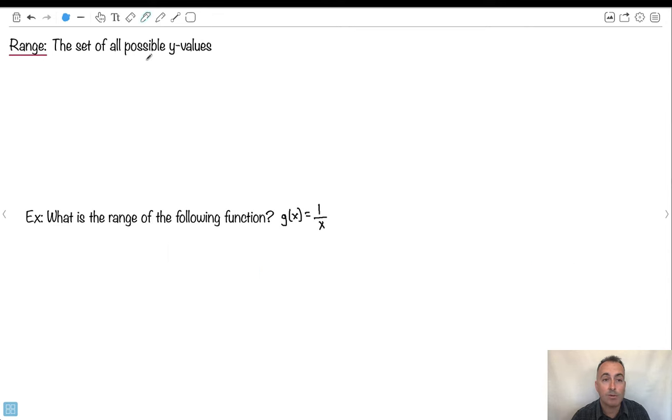If I want to do range, it's just the y value. Same idea. You could have y as an element of real numbers, or y can't be 1. There's lots of different examples.